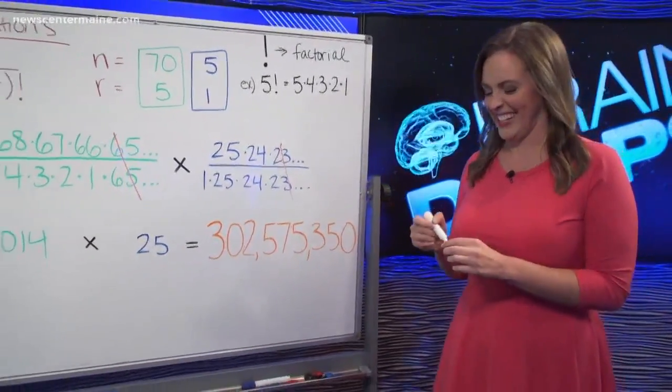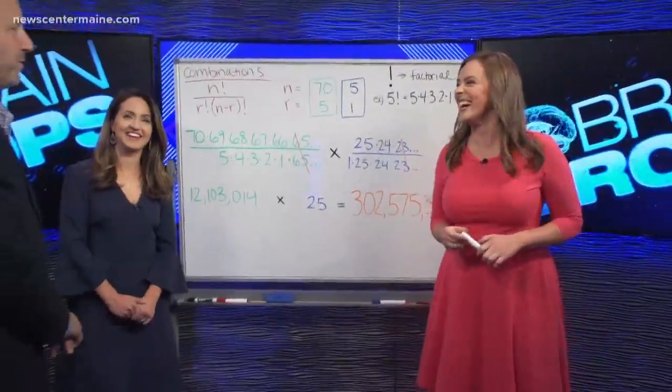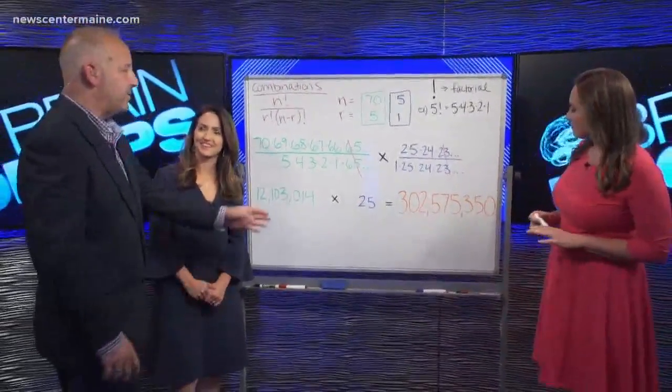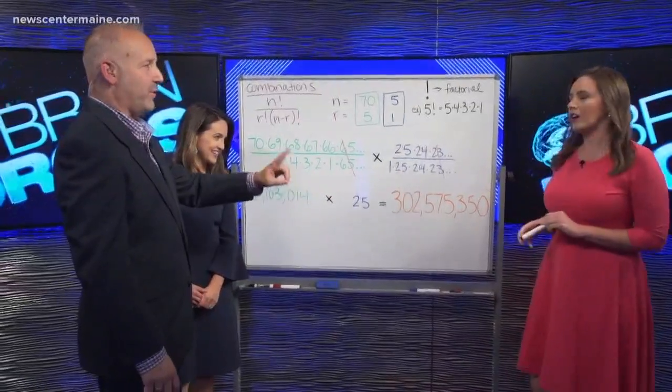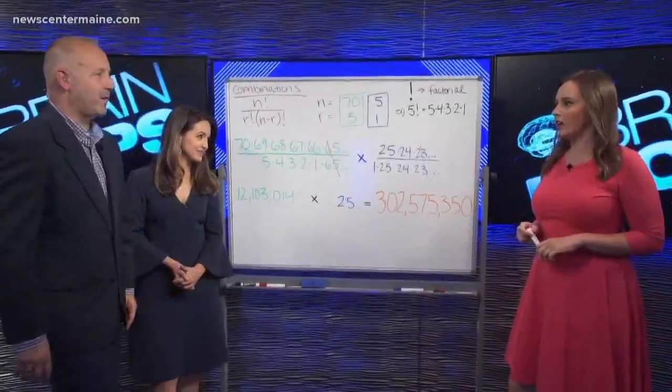So if you wanted to corner the market and win your billion dollars, you could spend $302,575,350 in tickets. And potentially, if you're the only winner, will you then get your billion dollars? Yeah.